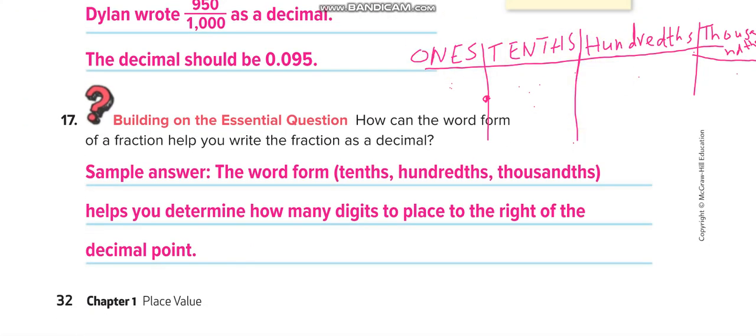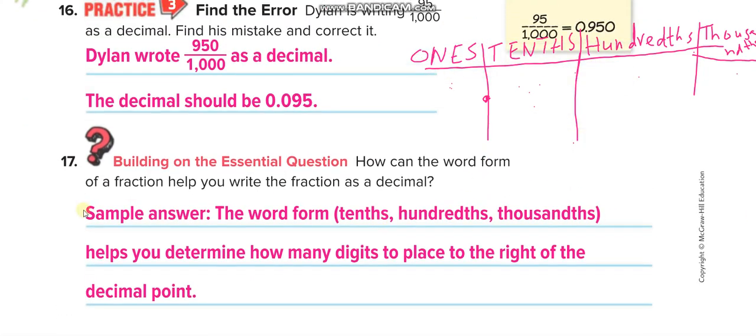How can the word form of a fraction help you write the fraction as a decimal? Guys, don't write this sample answer. Start from here: the word form tenths, hundredths, thousandths helps you determine how many digits to place to the right of the decimal point. If it is tenths, we will write only one digit. If it is hundredths, we will write two digits. If it is thousandths, we will write three digits. I hope you understand. Don't forget to finish your homework, page number 33 and 34.